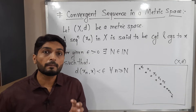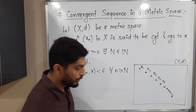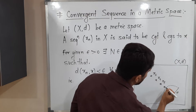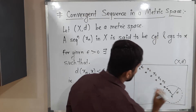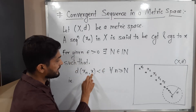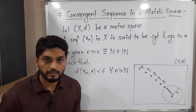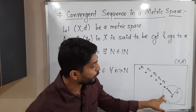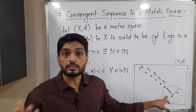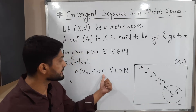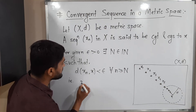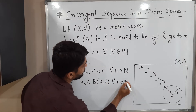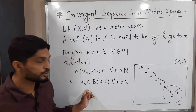The same thing can be written using an open ball. Consider an open ball with center X and radius epsilon. If the distance from any point to the center is less than the radius, the point lies inside the ball. Here D(X_n, X) < epsilon means X_n lies inside the ball with center X and radius epsilon for all n ≥ N.